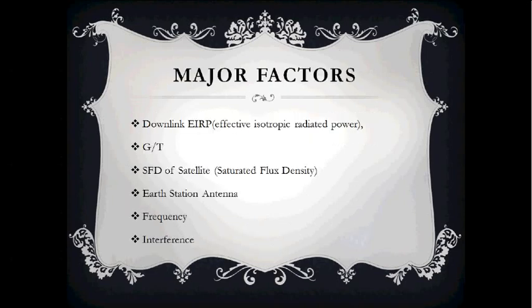Major factors in link budget analysis are downlink effective isotropic radiated power, gain-to-noise temperature ratio, saturated flux density of satellite, Earth station antenna, frequency, and interference.